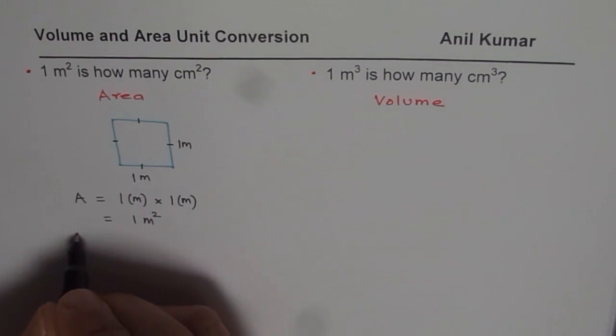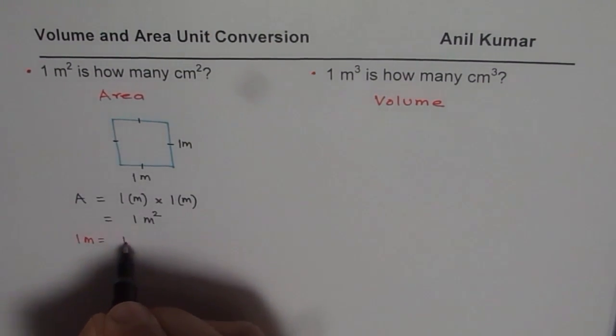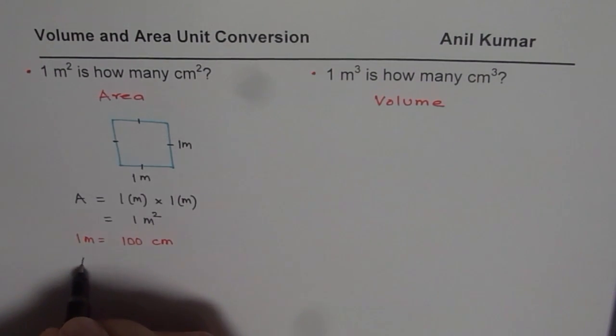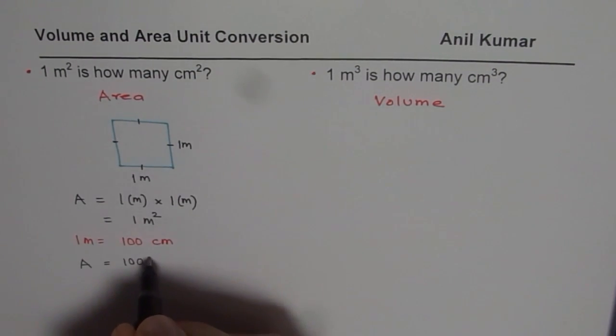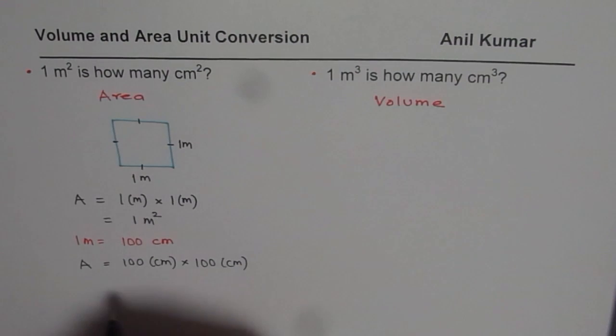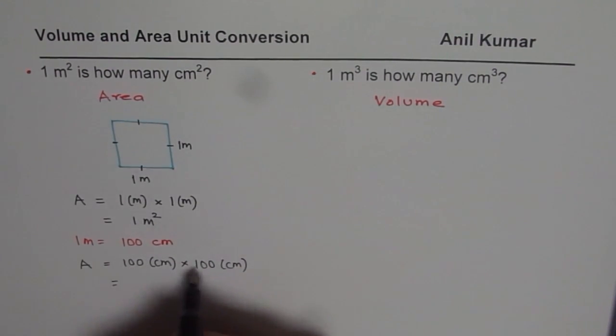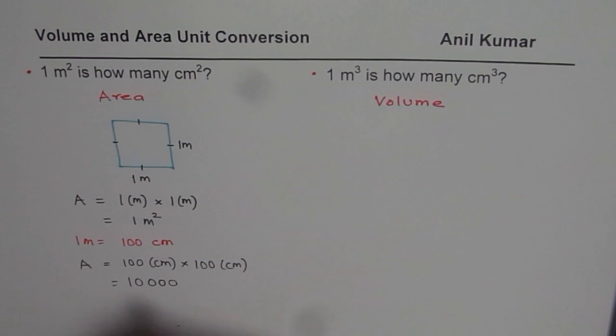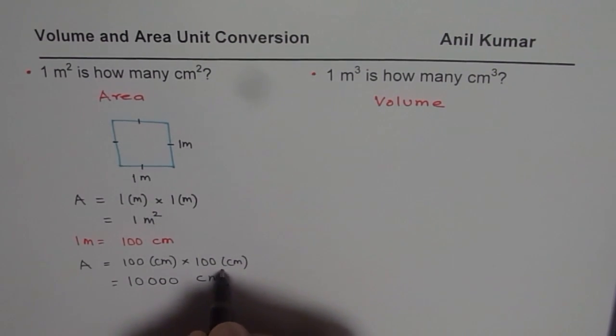Now if I have to convert this to centimeters then what can I do? I know one meter equals 100 centimeters. So to find the area in centimeter squares I will write one meter as 100 centimeters times 100 centimeters. So if I multiply 100 and 100, how many zeros do I get? 2 and 2, 4 zeros. So it becomes 10,000 centimeters square.